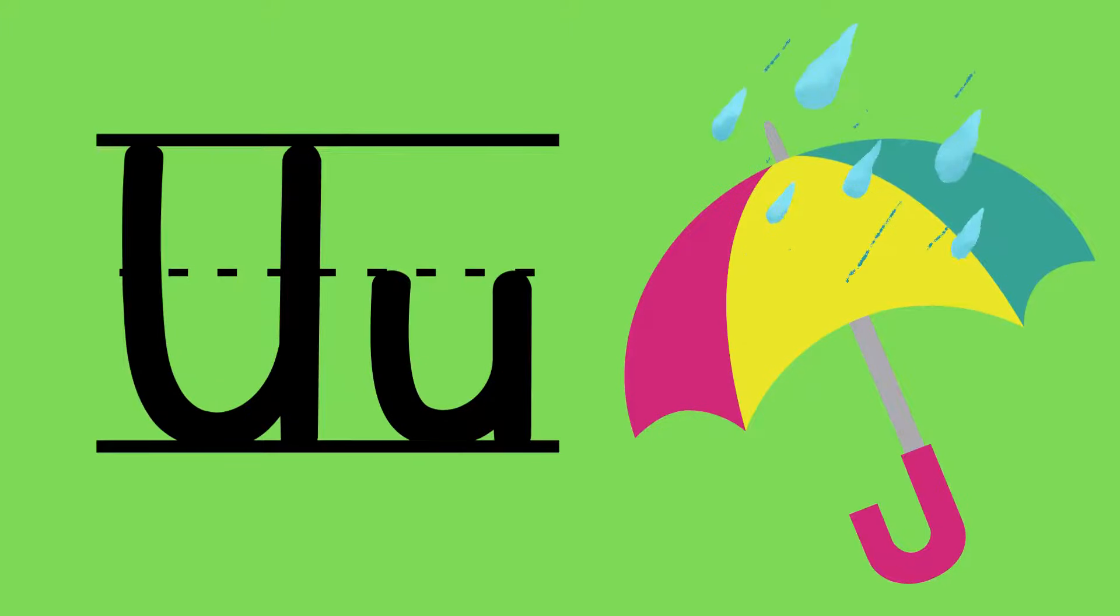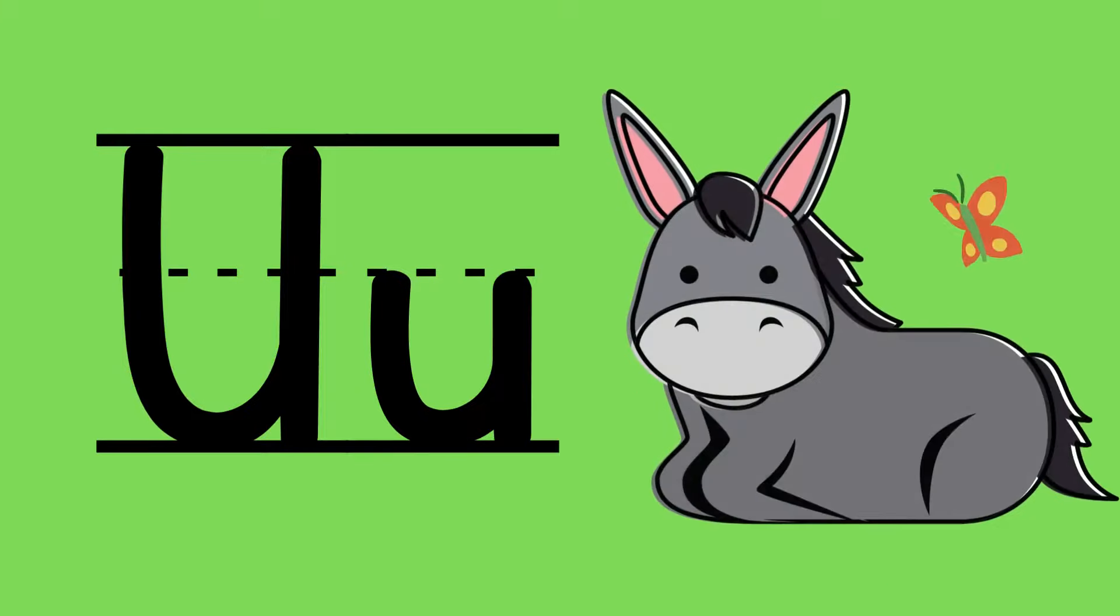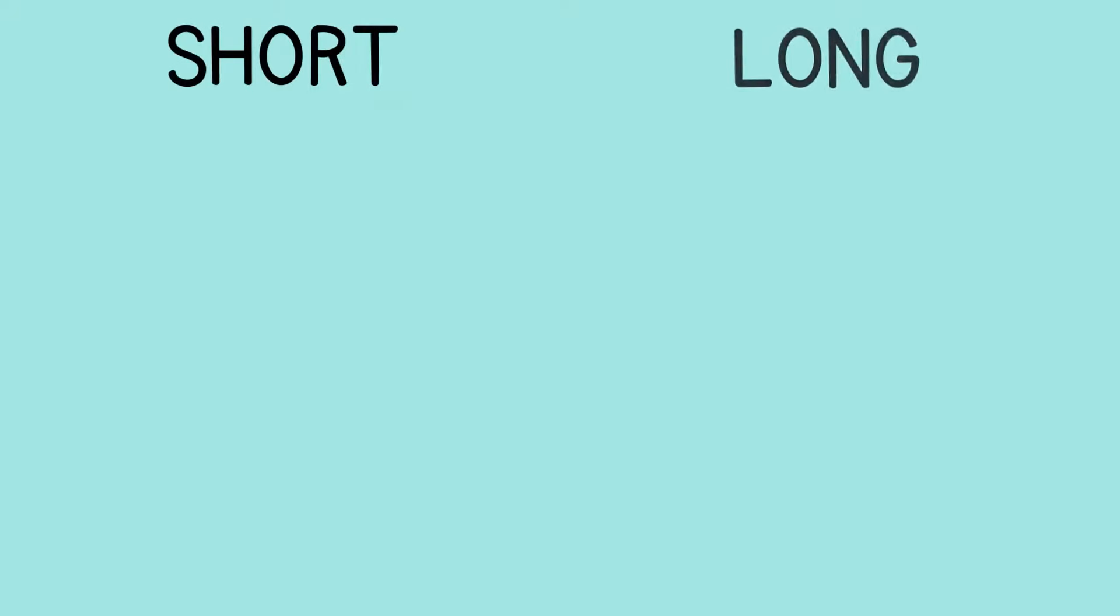U's short sound is 'u' as in umbrella, and U's long sound is 'ū' as in mule. Now sometimes U can also say 'oo', so be careful. You might hear 'ū' or you might hear 'oo' - both are a long U sound.